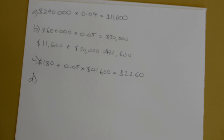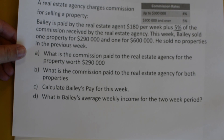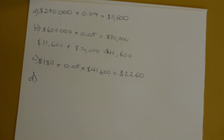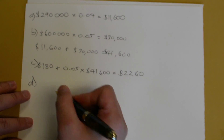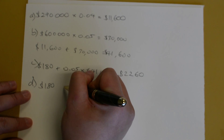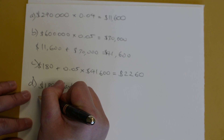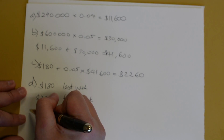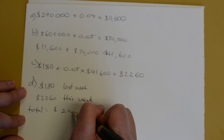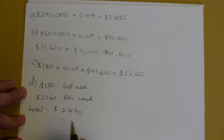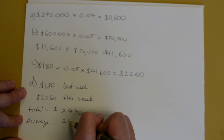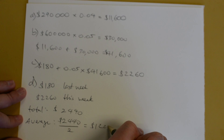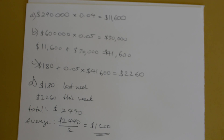Finally, Part D: what is Bailey's average weekly income for the two-week period? In the previous week he sold no properties, so he earns no commission — only his retainer of $180. This week he earned $2,260. His total over two weeks is $2,440. So his average income is $2,440 divided by 2, which comes to $1,220 per week — still respectable.